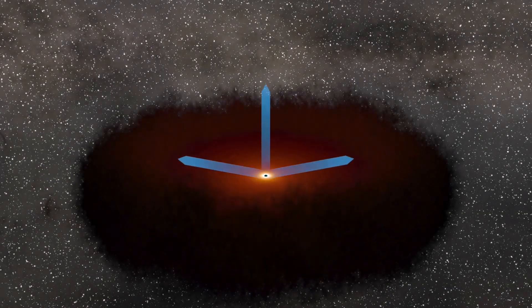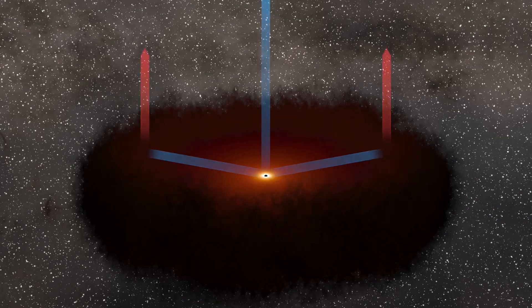Nevertheless, reverberation mapping is an innovative and interesting way to measure the mass of a supermassive black hole in a far away galaxy. So far, only around 40 supermassive black holes have been mapped this way, as it does depend on having favourable geometry and viewing angle of the AGN.